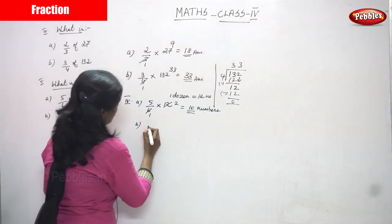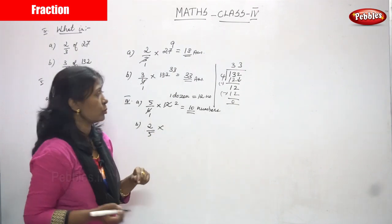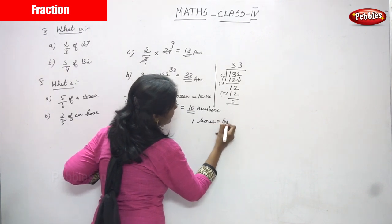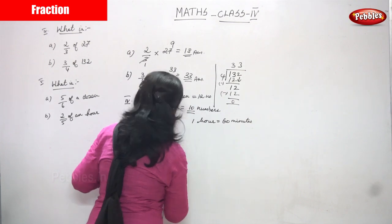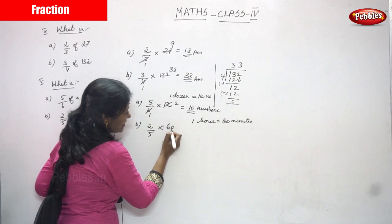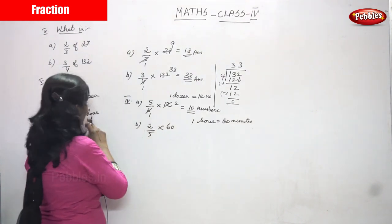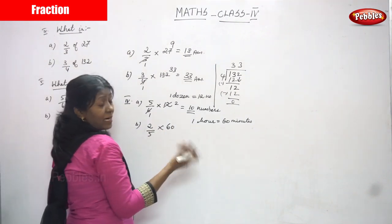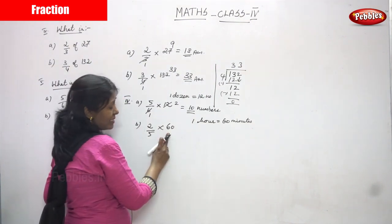Next: 2 by 5 of an hour. So 2 by 5 into 1 hour — that means 1 hour equals how many minutes? 1 hour equals 60 minutes. So 2 by 5 of means put a multiplication sign, then write 60. Because 1 hour equals 60 minutes, and here it is given as hour, that is why I have written 60. The final answer will be in minutes.